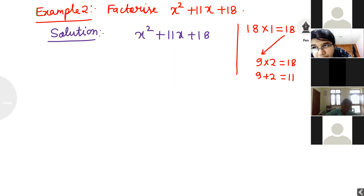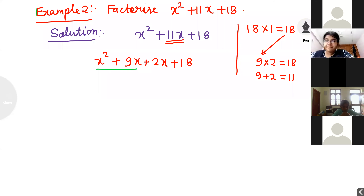In the place of 11x, I will write 9x plus 2x. So we have x squared plus 9x plus 2x plus 18. Make sure both additions give 11x — 9x plus 2x equals 11x. After that, you already know the grouping method. If the number of terms is even, we can make groups. This is one group, and that is the second group.